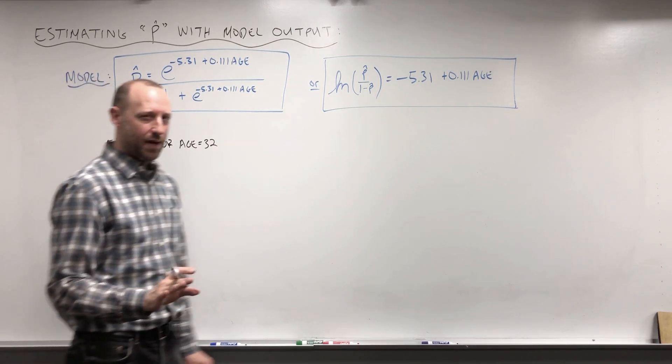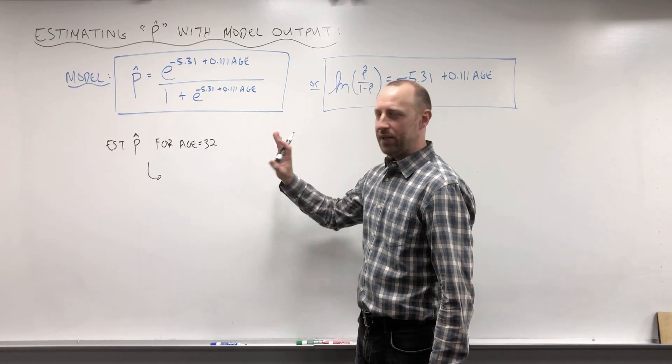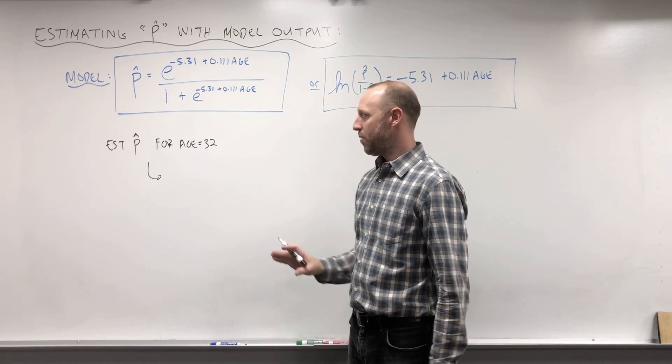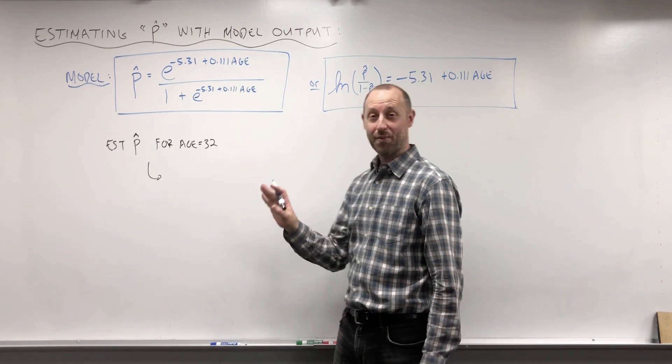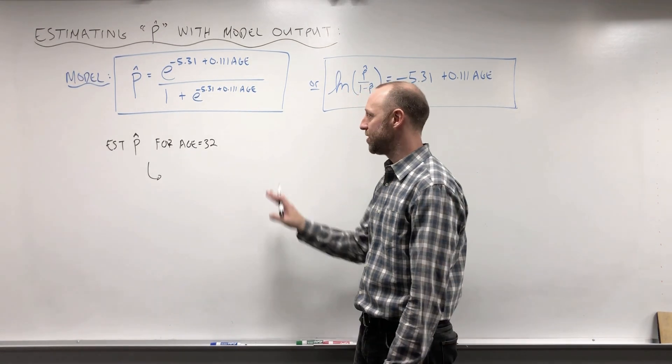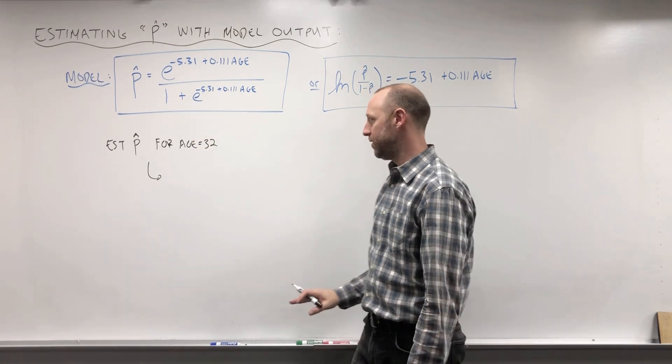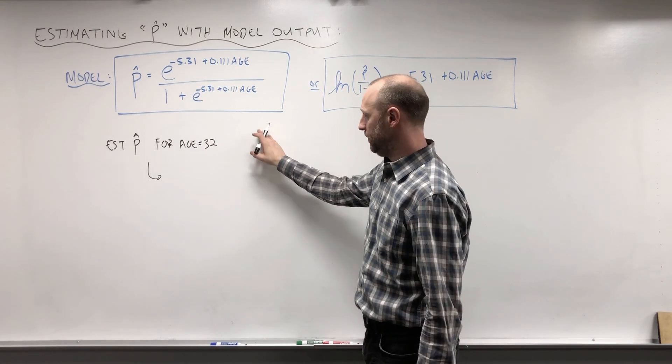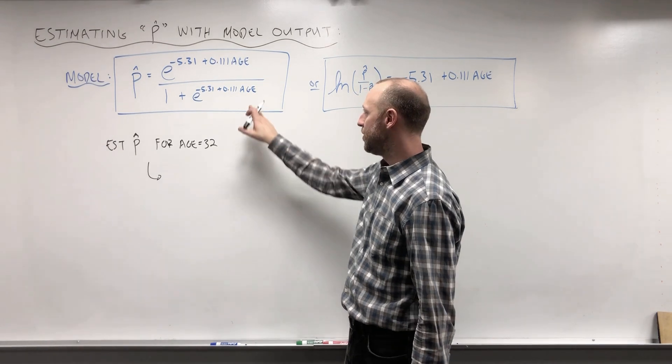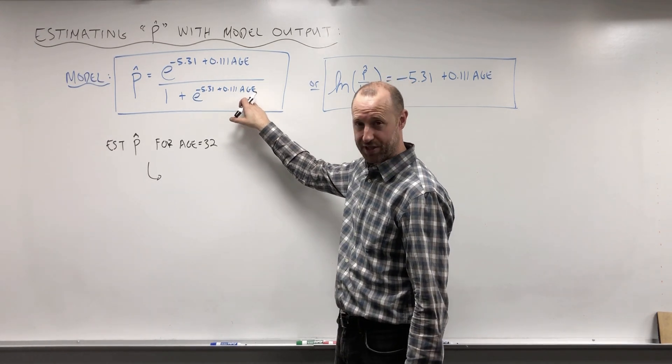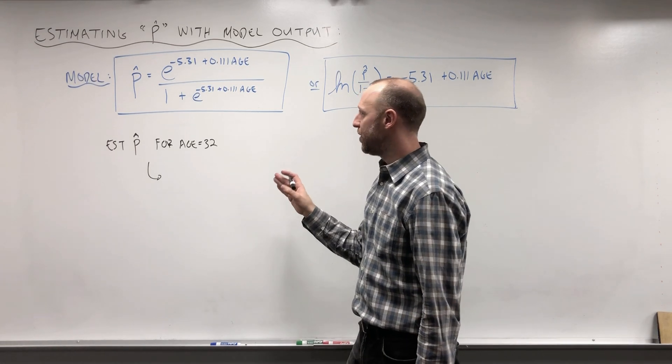Before I do that, I want to make a quick reminder that we haven't specified a goal for our model. We've previously talked about model building and variable selection. I'm not saying this model is good or correct right now; I just want to show you how we can substitute into this model to get predicted probabilities. If we want to predict the probability of someone having coronary heart disease, we probably need to use more variables than just their age.